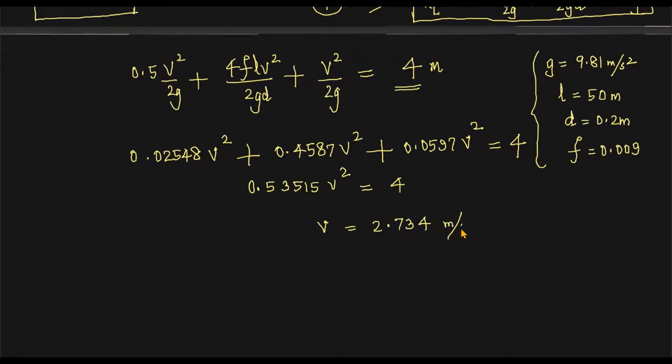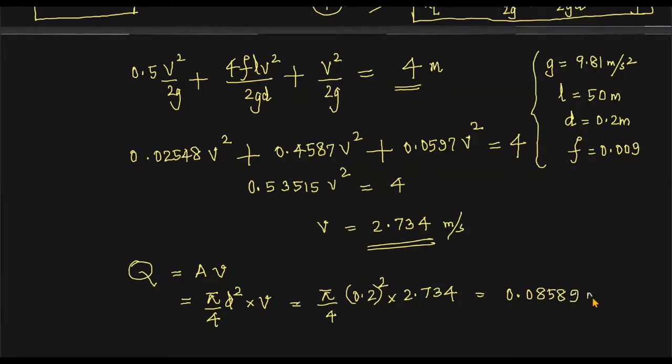Now you have to find out the discharge Q. Discharge Q through this pipeline, Q is equal to area into velocity. The area of the pipe is pi by 4D square, so pi by 4 into 0.2 square into velocity 2.734. If you take the product, you will get 0.08589 meter cube per second. Since it's a big unit, you can convert this into liter per second. This answer multiplied by thousand, you will get 85.89 liters per second is the discharge. That is the answer required in the question.